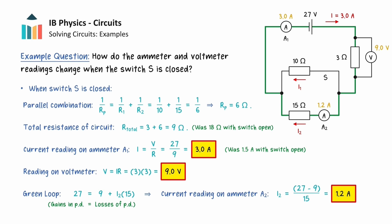With an increased current in the circuit, the potential difference across the 3 ohm resistor increased. But since the loop rule still holds, the potential difference across the 15 ohm resistor must decrease, and so therefore the current through it has decreased as shown by the reading on ammeter 2. This now concludes our video on solving example questions involving series and parallel circuits. Thank you for watching.